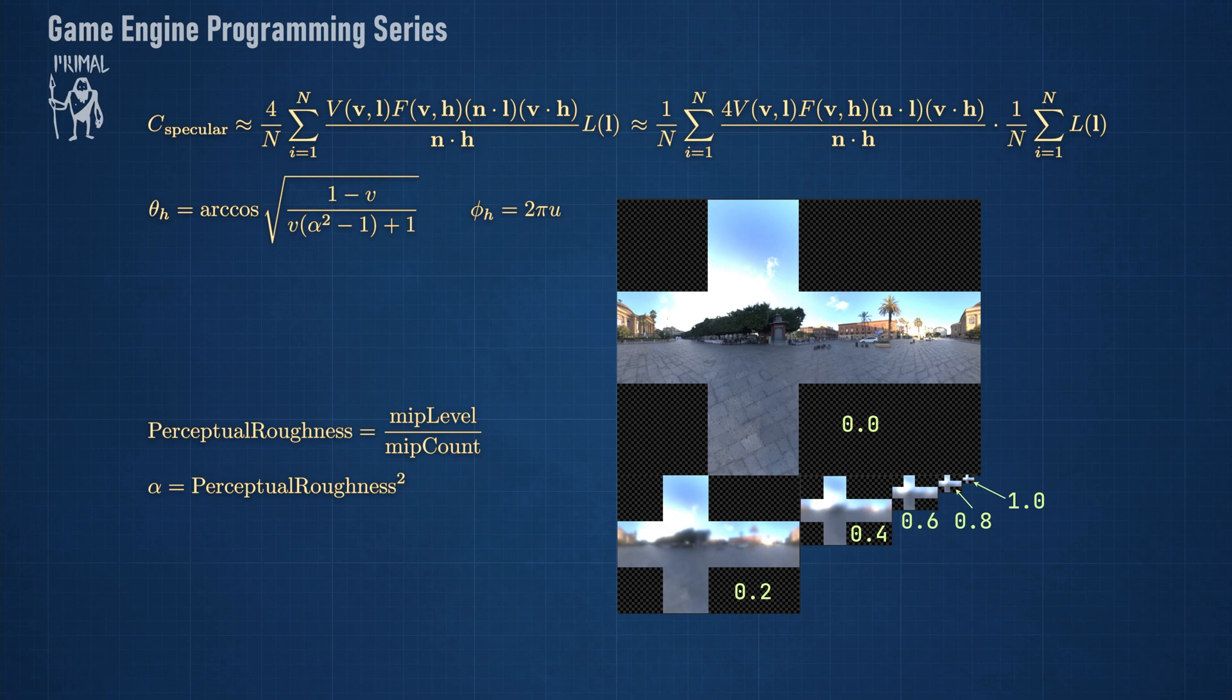Therefore, we can put the results for higher roughness values in smaller images since they contain less details. We can use the MIP levels of the resulting texture for this purpose. The first MIP level has the most detail and corresponds to a perfectly smooth surface. The following MIP levels contain the results for increasingly higher roughness values.